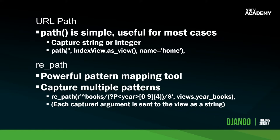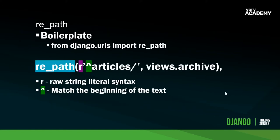I'm going to provide some code examples so we can see this in action. To use a regular expression path, first we need to import it from URLs - we can use both `path` and `re_path` at the same time on different lines. We can definitely mix and match regular expressions and normal paths. You can see we define `re_path` instead of `path`, and we have some special characters: the `r` prefix, which is just a raw string literal, and the caret `^`.